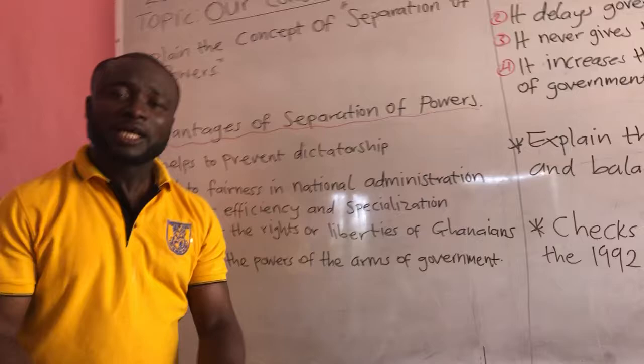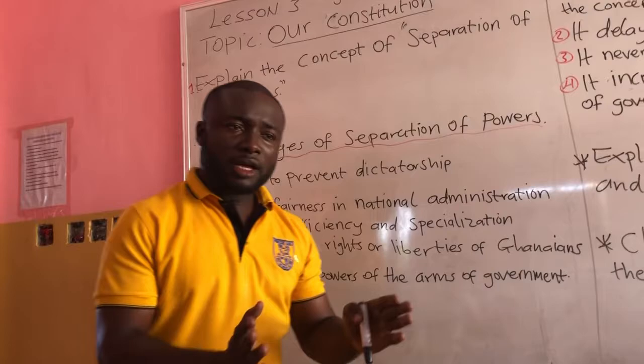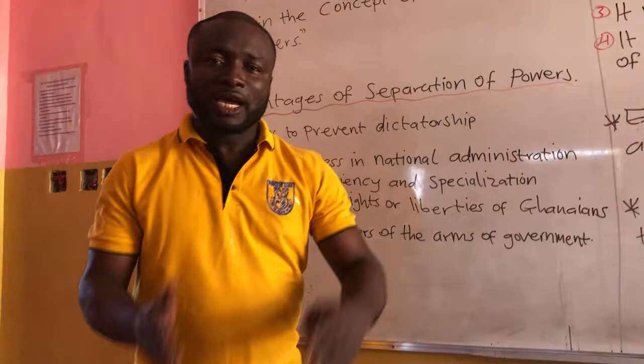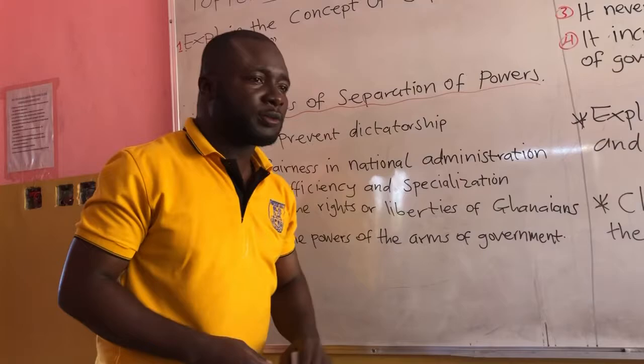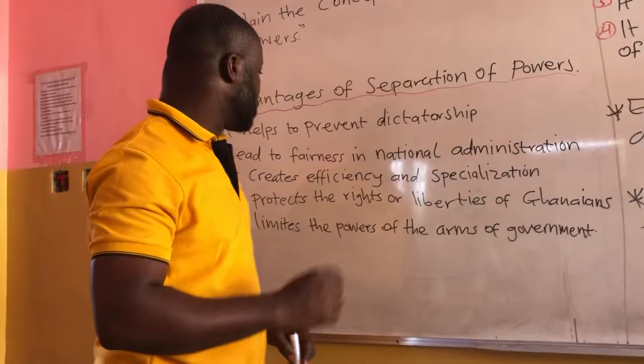The judiciary is meant to interpret the constitution. The executive formulates and implements policies. And the legislature is to make laws. So one arm of government cannot dictate for the other arm of government. Separation of powers is there to prevent dictatorship — no arm can presume to be more powerful than another, which is not possible.